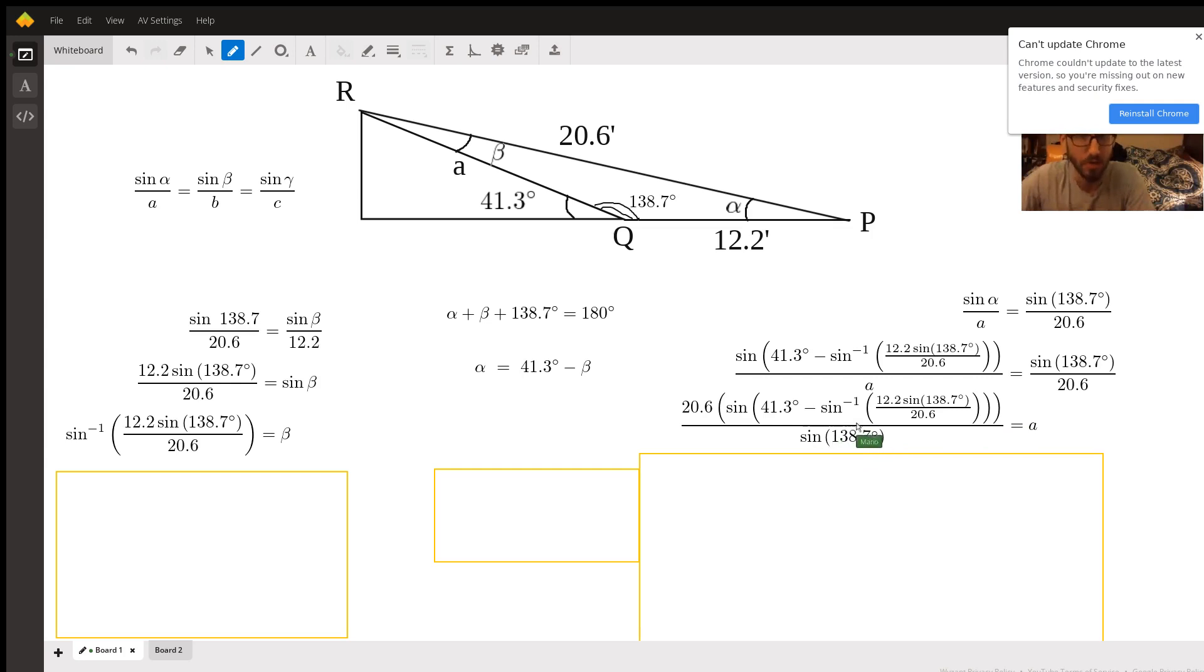Going through and doing this computation, if you plug that all in, you're going to get a pretty long decimal. But if we round it just simply to one decimal place, keeping true to the given information, 20.6 all have been to one decimal place, we get 9.8 feet as the measure from Q to R.